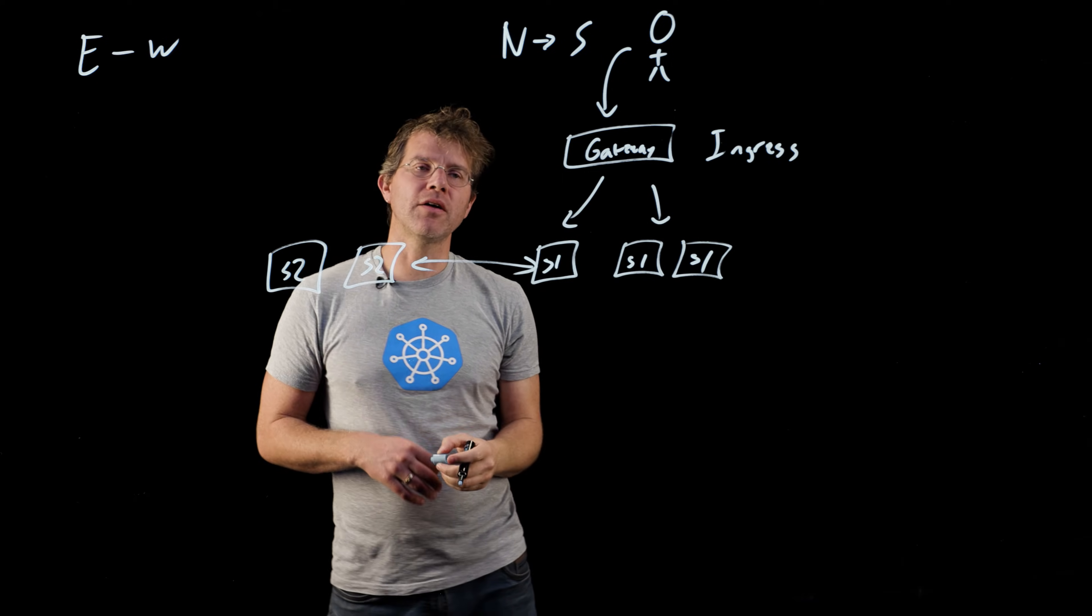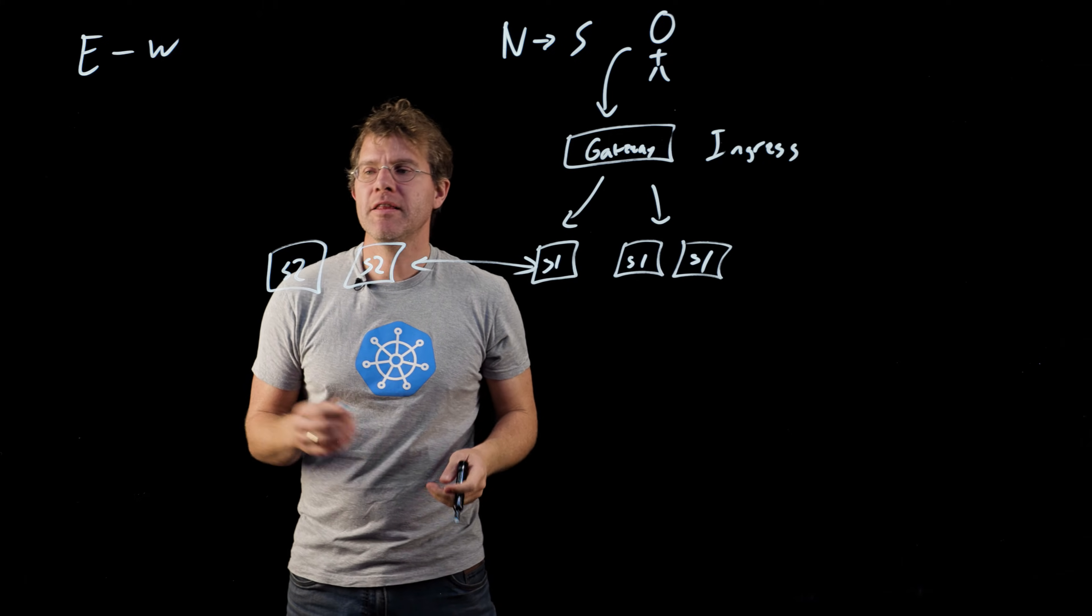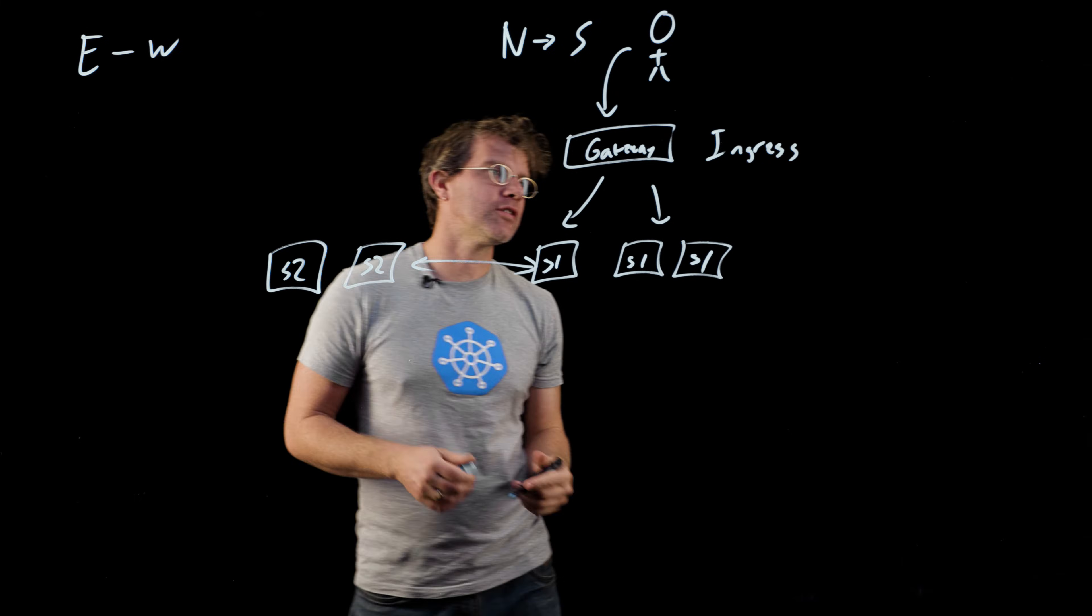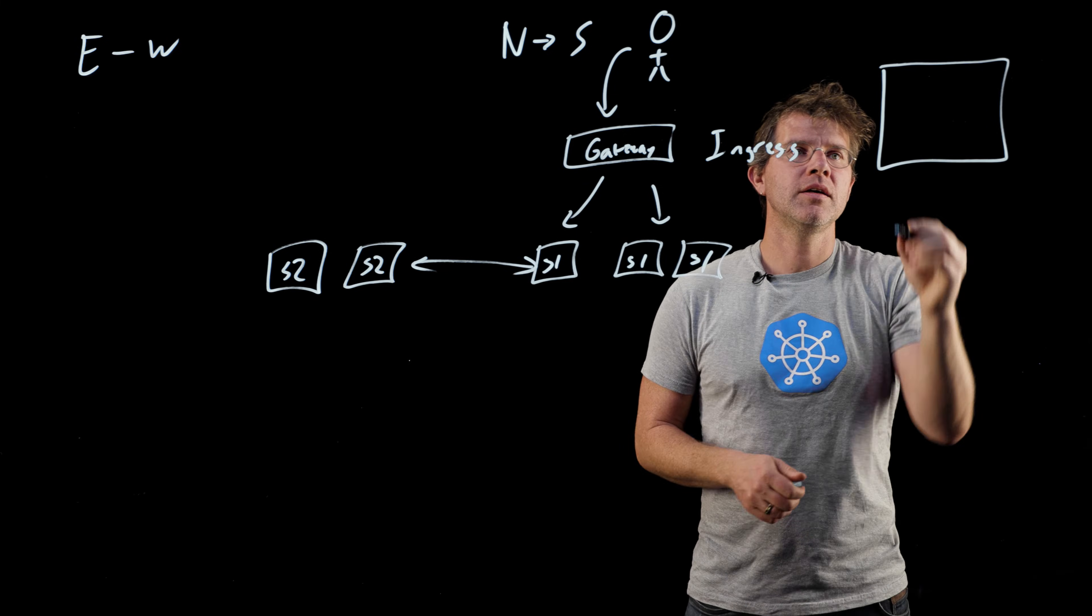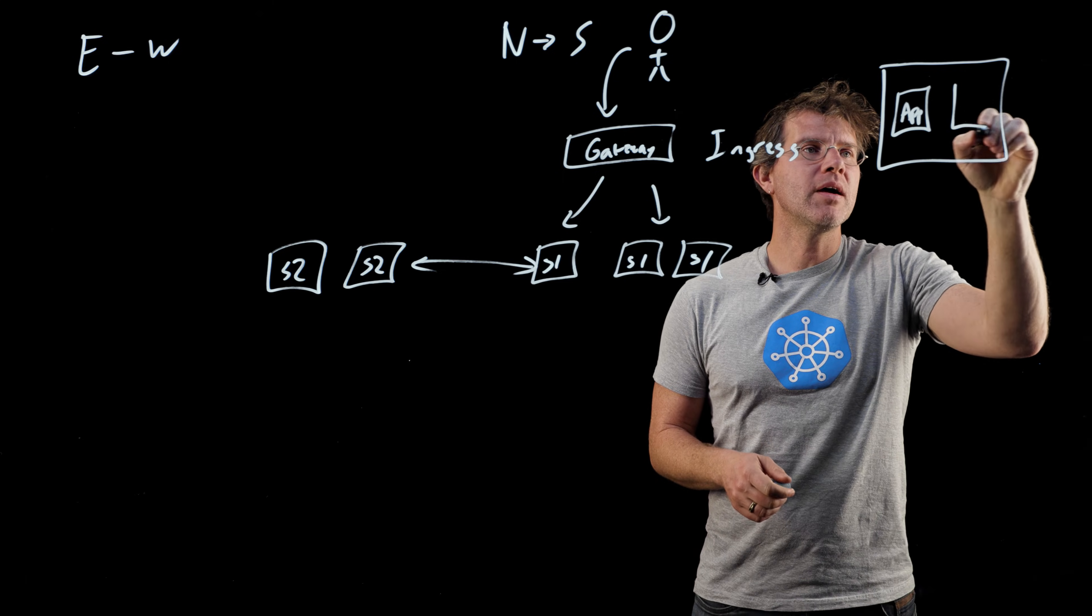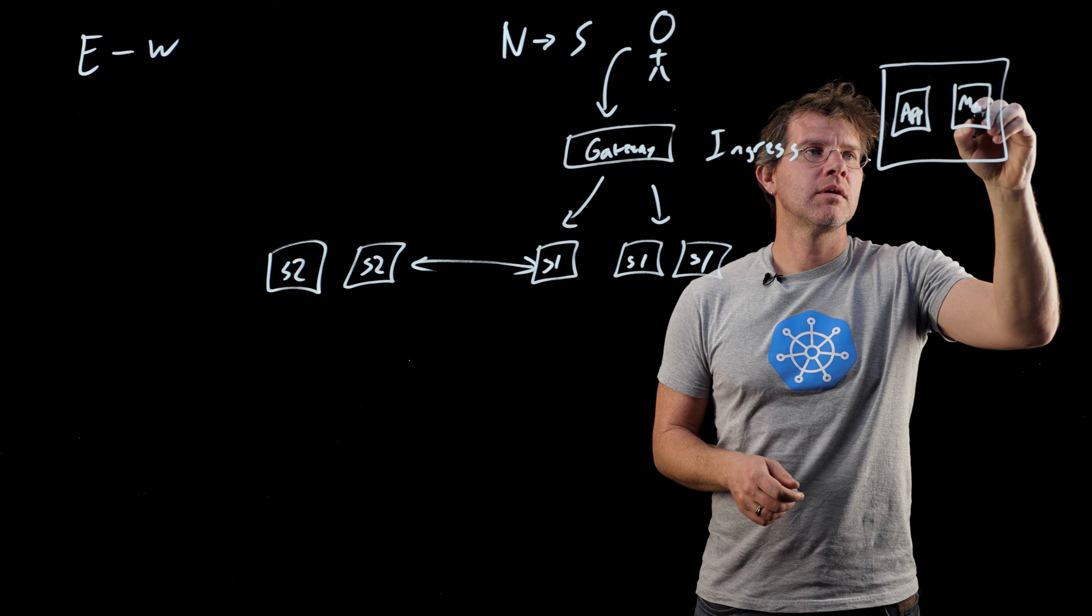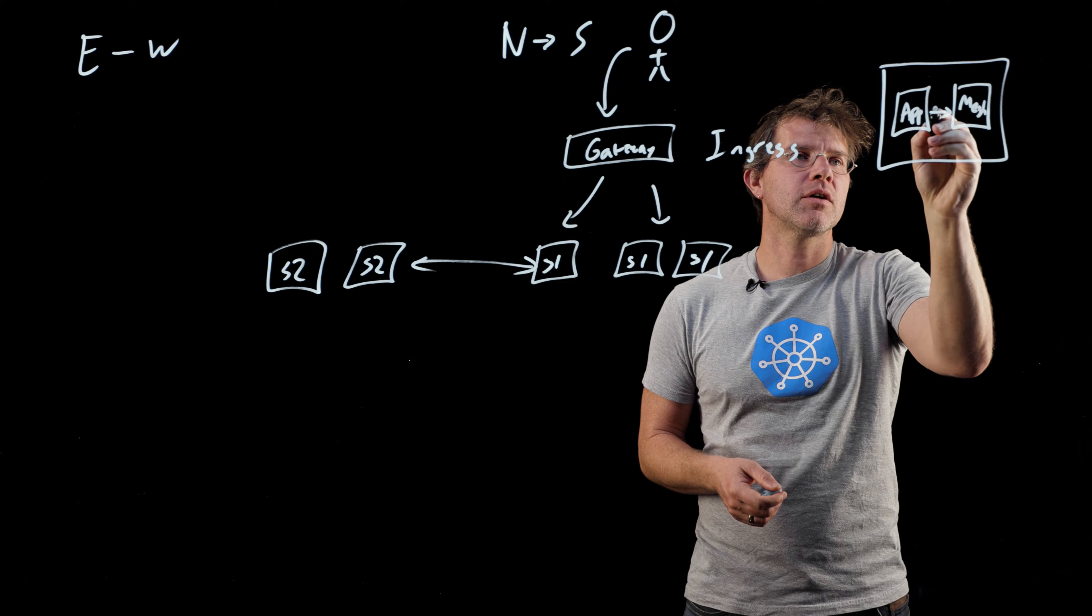When you're talking about the mesh itself, there's a couple different values that it brings to the table. The first is that many of these meshes install as sidecars. If you imagine you have your main pod, you have your app container, and then you have a mesh sidecar that is a separate container within the same pod, and they talk to each other on localhost.